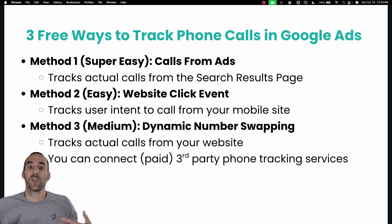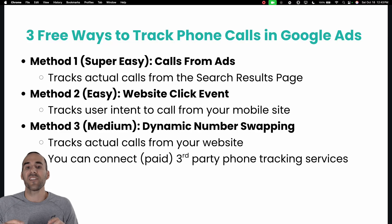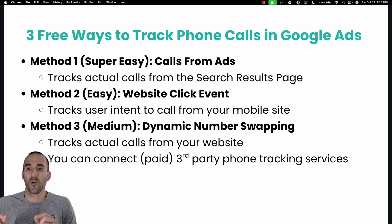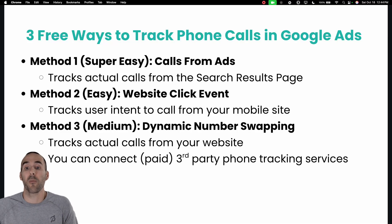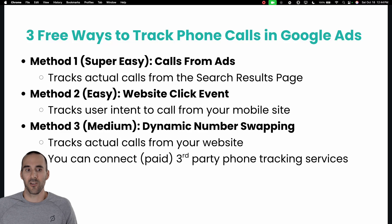Method number one, which I deem as super easy, is tracking calls from your ads. Method two is also easy — that's using your website click events on a phone number. And then method three I label as medium, and that's where you dynamically swap the number that is on your website, which allows you to see different metrics and reporting that Google has from that phone call. The number on your website might change, but the end destination — calling you — is still the same.